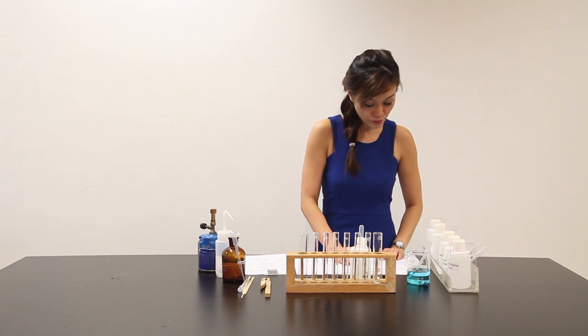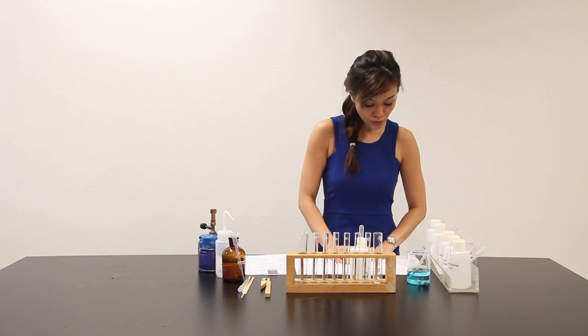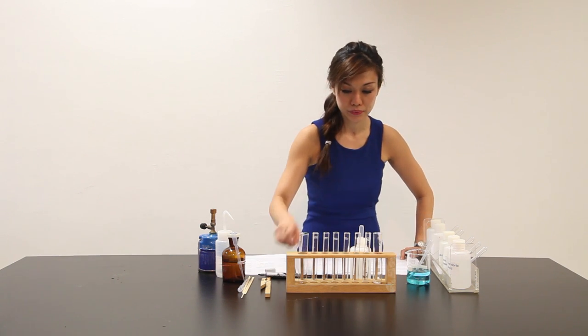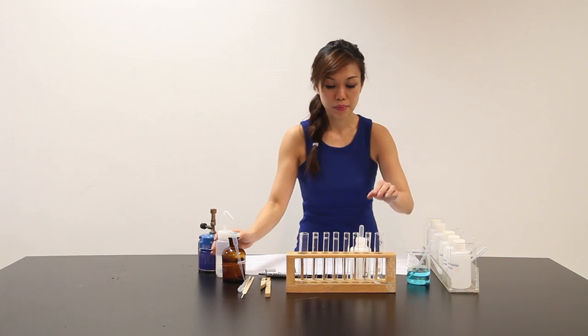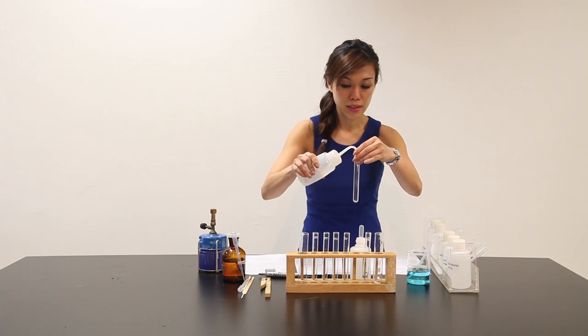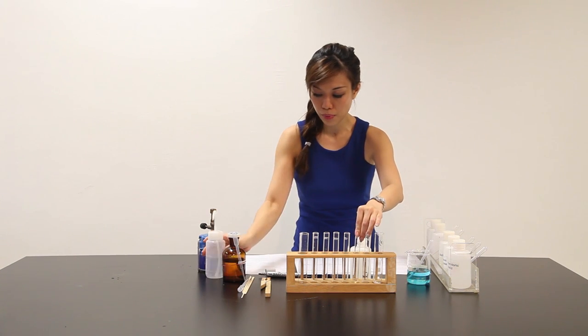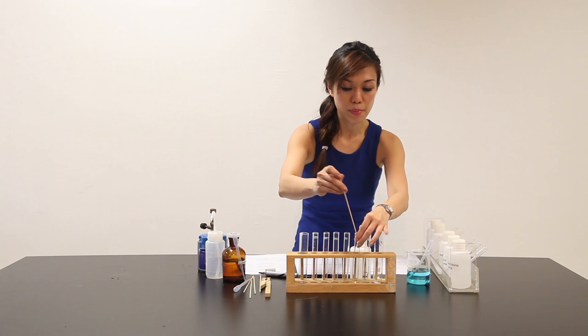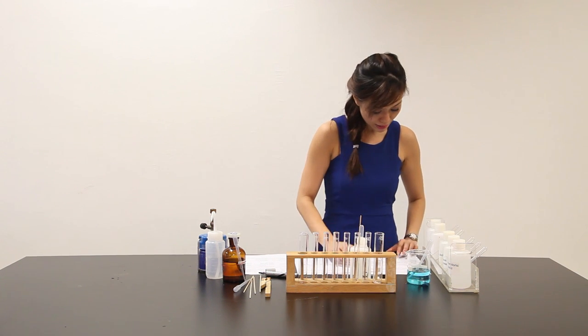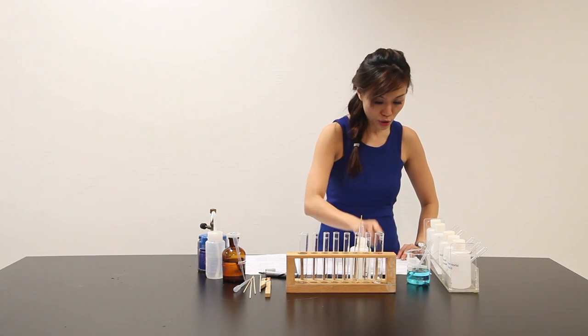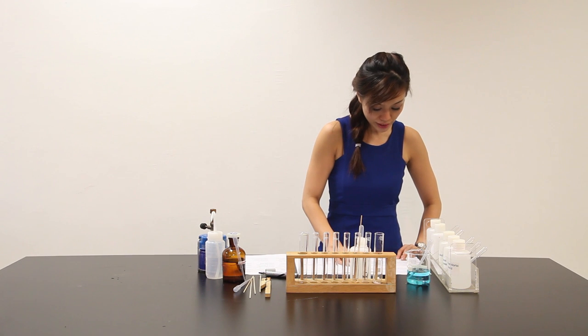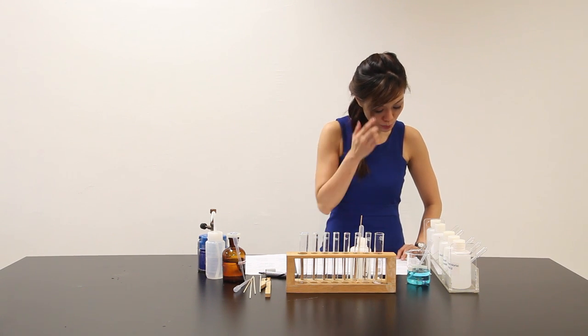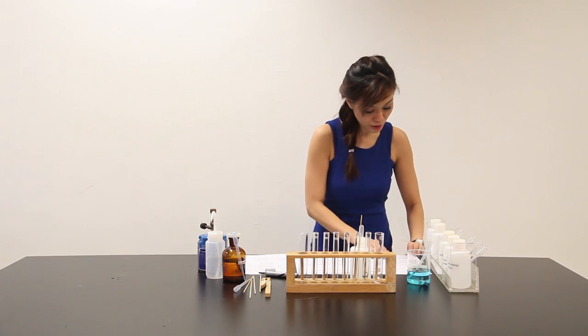Adjust the Bunsen burner to give a blue flame. Moisten the end of the wooden splint with water. I'm going to use the distilled water here. Let me fill this with a little bit of water. Moisten it. Let me put the splint inside. And later on, I can just moisten the tip here with solid X. Place this end of splint in the Bunsen burner flame. Record your observation.